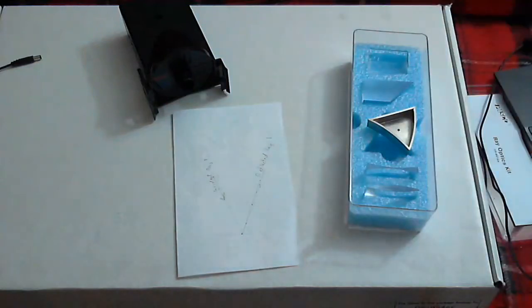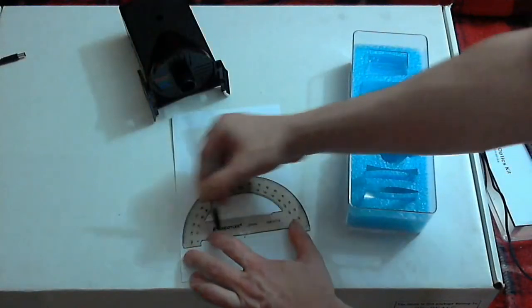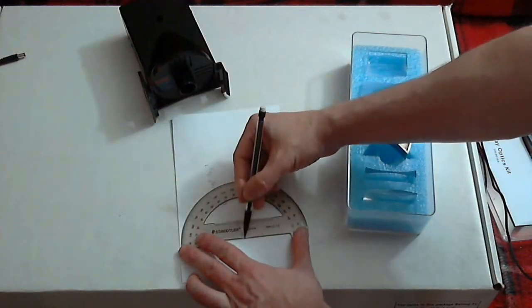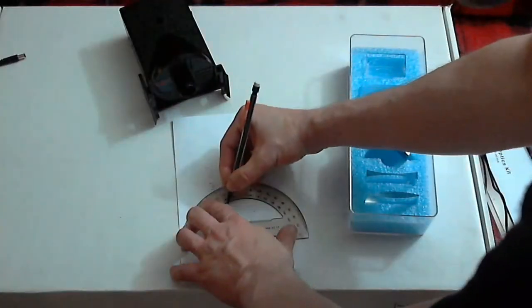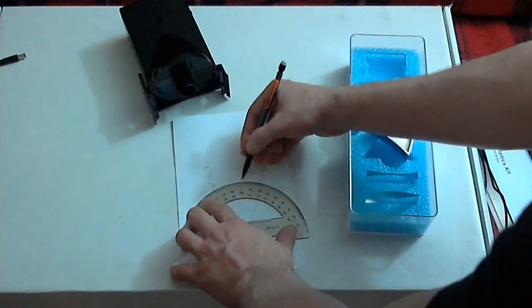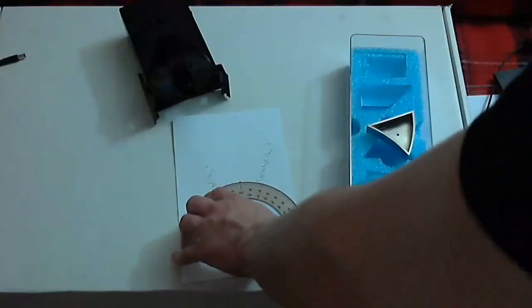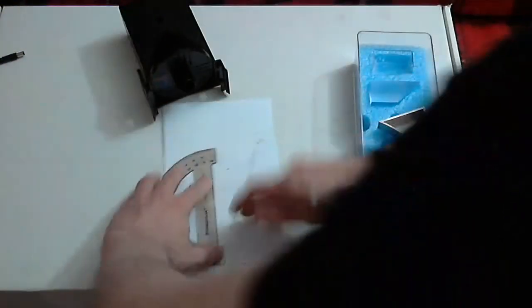To be able to establish the angle of incidence and reflection, you first need a normal to the surface at the point of reflection. For that, you will need to put your protractor aligned at the zero point along the straight edge at the point of reflection and trace out the so-called normal to the surface, which is the perpendicular, 90 degrees to the surface, and then trace it out.